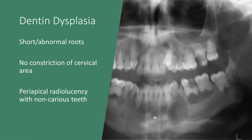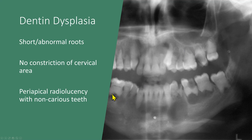One critical finding of dentin dysplasia is periapical radiolucency. There are multiple teeth with caries, but even the non-carious teeth have periapical radiolucencies. This tooth is non-carious or has a small restoration and there is a radiolucency. This tooth is non-carious and also has a radiolucency.